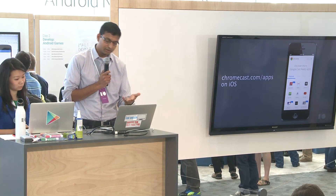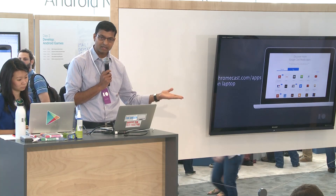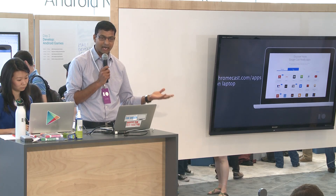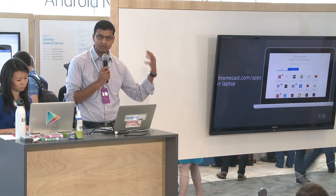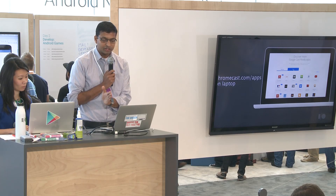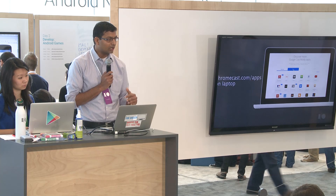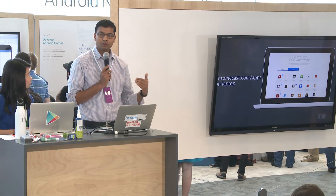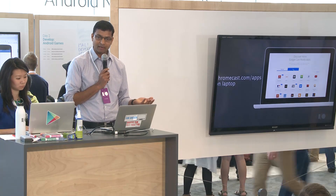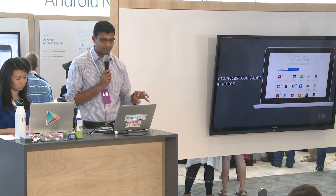You can also go to the web experience on a laptop. Again, going to chromecast.com/apps — which is prominently displayed on your home screen — you have the featured, new, and more sections. In this experience, if you click on an app, you'll get an option to either go to the website, or you can install the iOS or the Android app onto your mobile devices directly from this website.